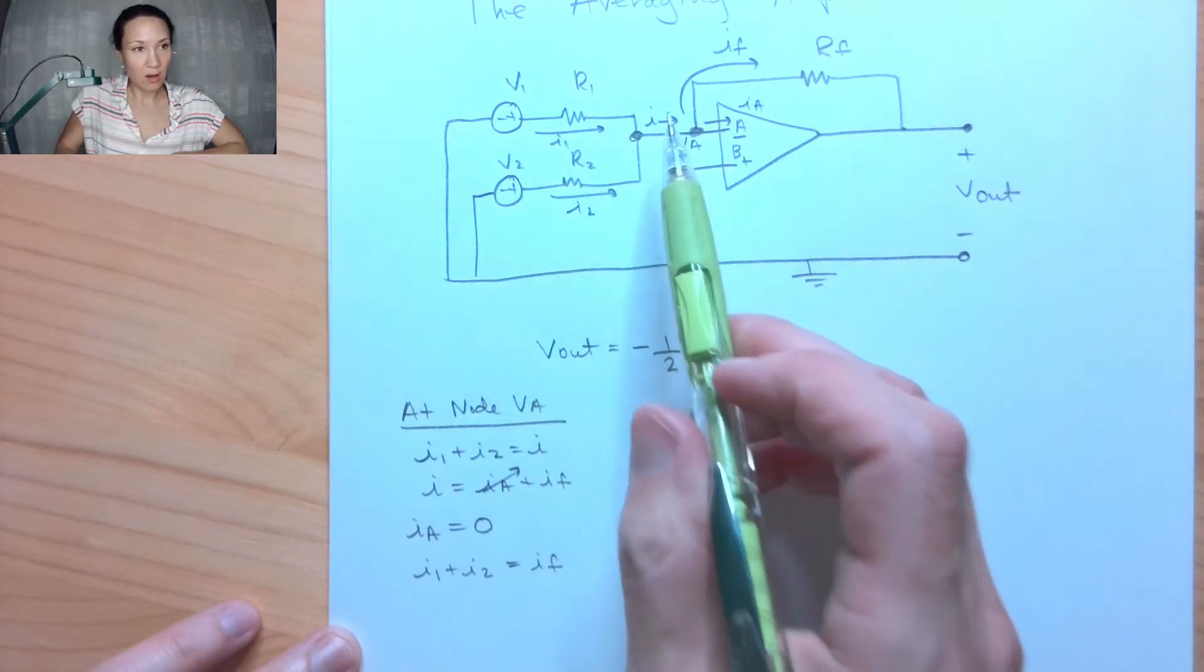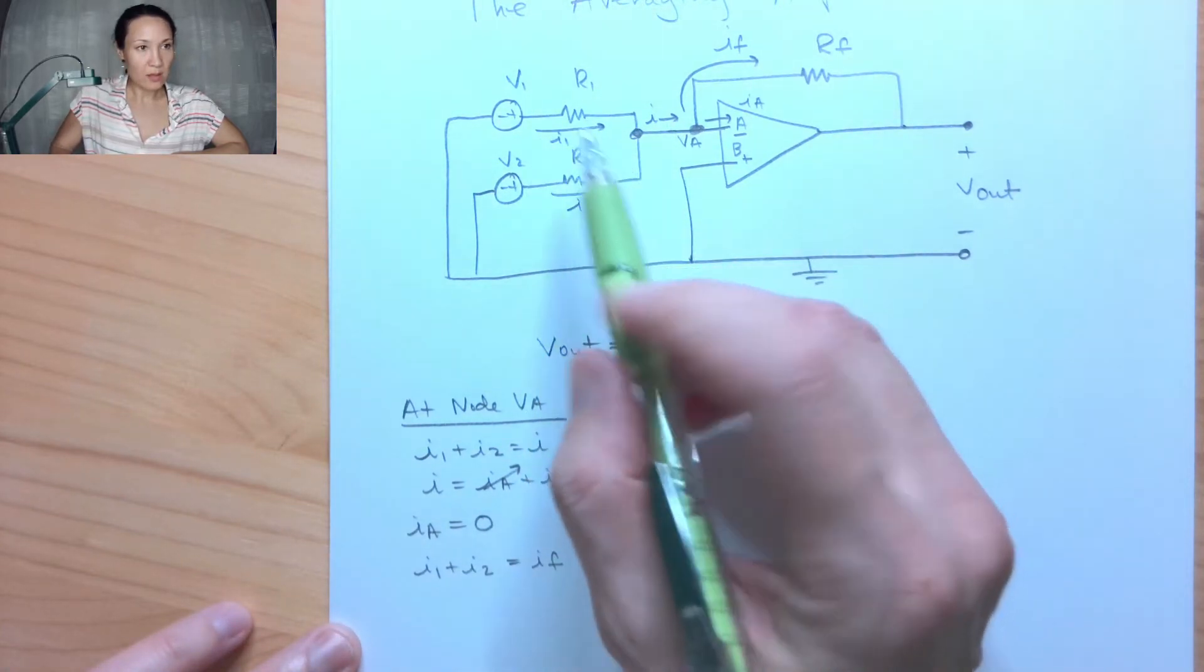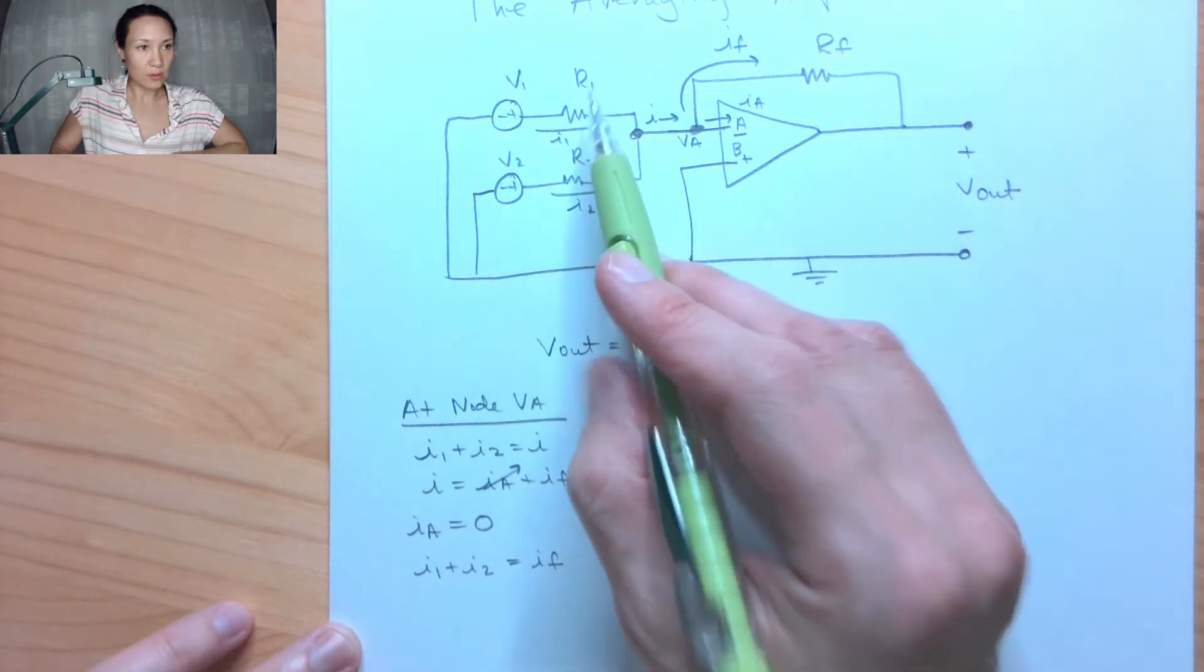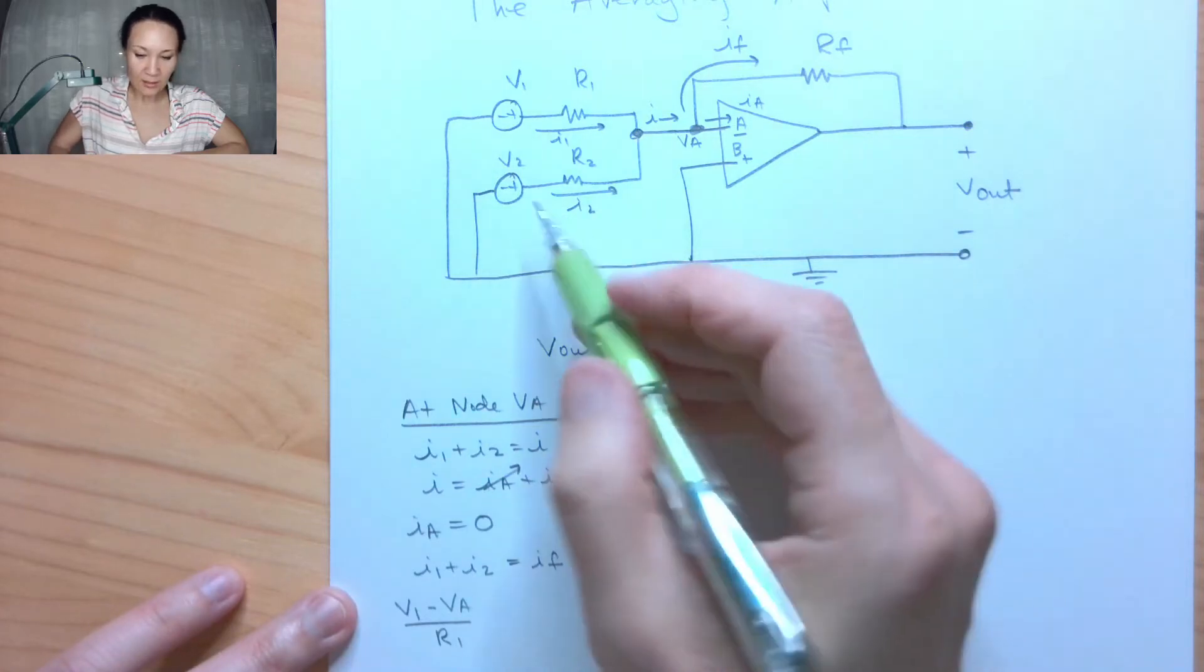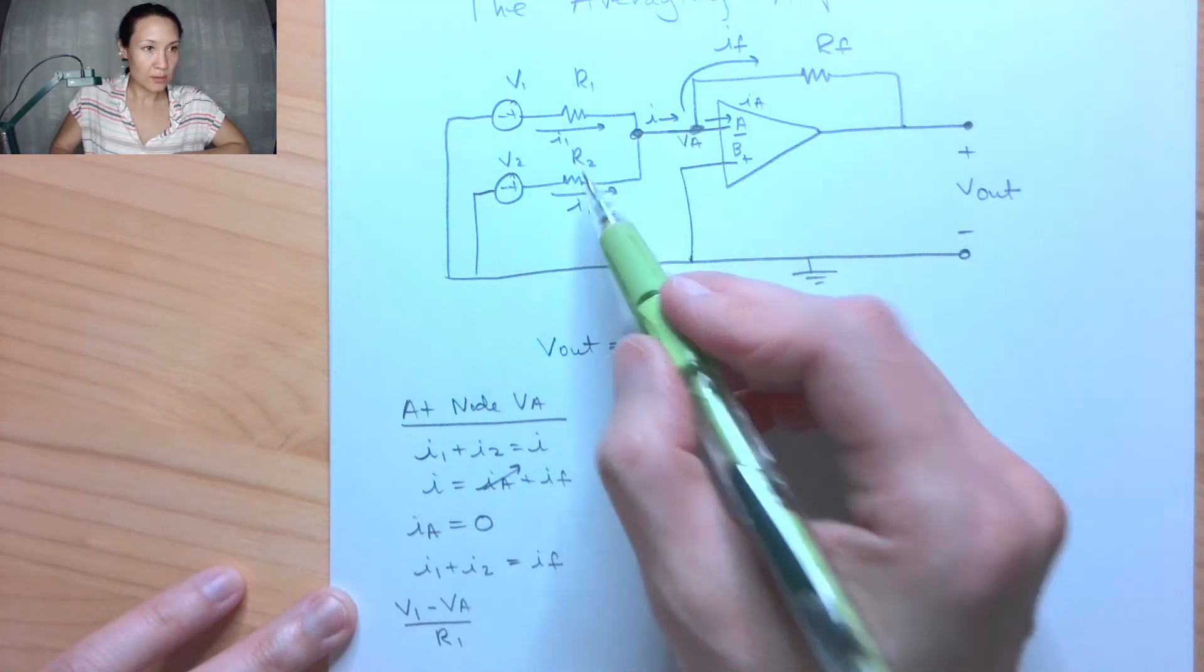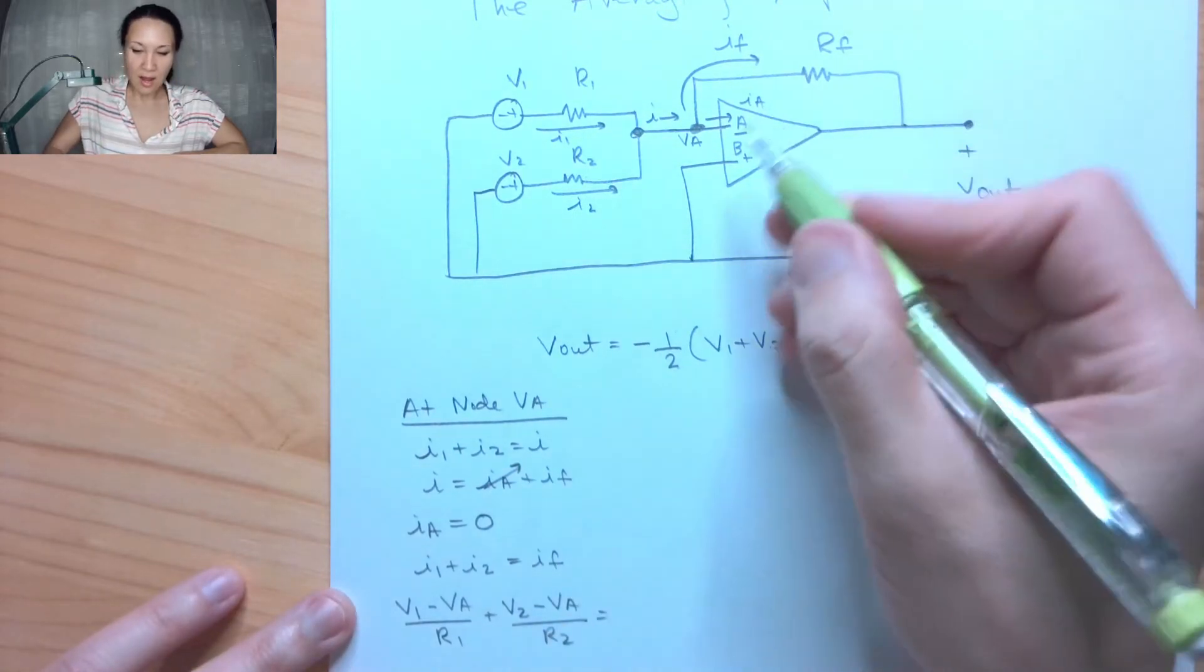So now the next step in my node voltage analysis is I'm going to replace these current with an equation in terms of V and R using Ohm's law. So to replace my I1, I'm going to take V1 minus VA over the resistor between. So this is going to be V1 minus VA divided by R1. I'm going to replace I2 with V2 minus VA over the resistor between, which is R2. So this is V2 minus VA over R2.